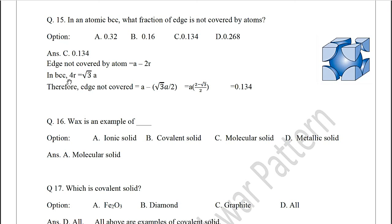In BCC, edge length a is not covered by atoms here. As you can see, this much distance, this is r, this is r. So edge not covered by atoms is equal to a minus 2r. In BCC we know that 4r equals root 3 a. If I put the value for 2r, that will be root 3 a by 2. If I put that value here, I will get a minus root 3 a by 2. And if you simplify that equation, you will get the value 0.134. So the correct option is C, 0.134. That much part is not covered.